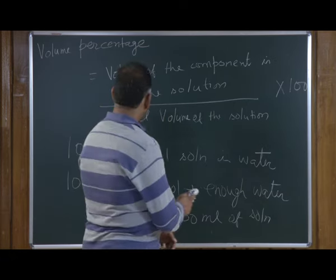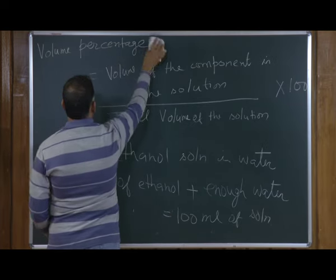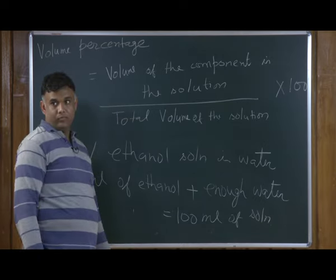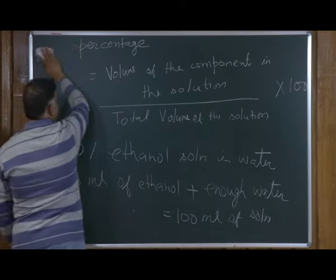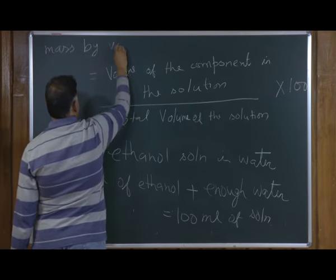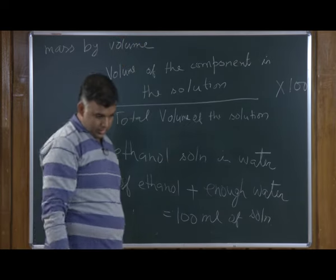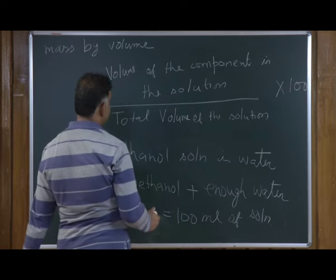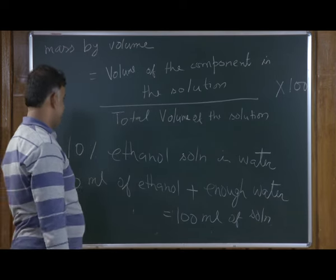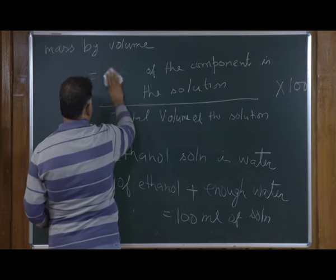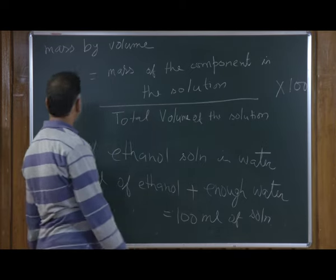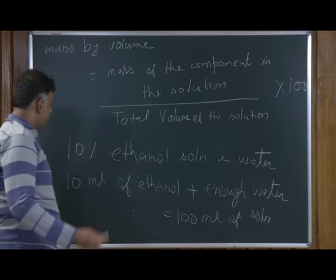The next unit is mass by volume. We have already discussed mass by mass (mass percentage) and volume by volume (volume percentage). Next is mass by volume: that is mass of the component in the solution per 100 ml of solution — mass of the component divided by the total volume of the solution.